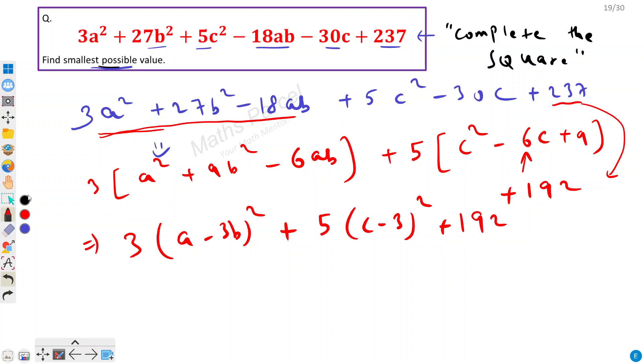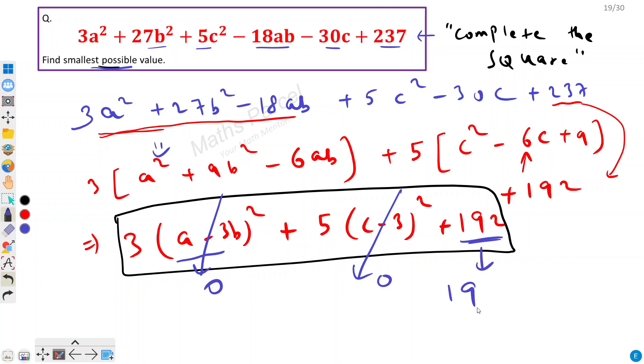Now this whole expression is reduced to this one. Now we have to find the minimum possible value of this whole expression. Now this is quite easy, right? Because we know that for all perfect squares the minimum possible value that it can hold is 0. So this will be 0, this will be 0, we are remained with 192. So our answer would be 192.